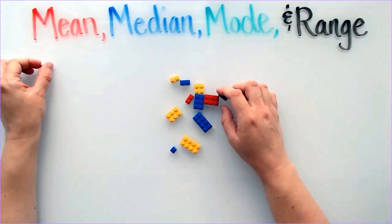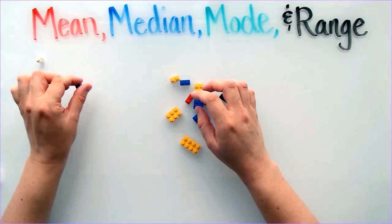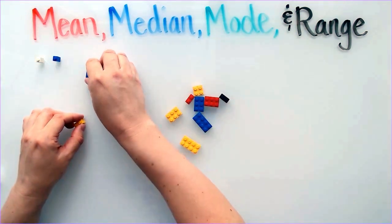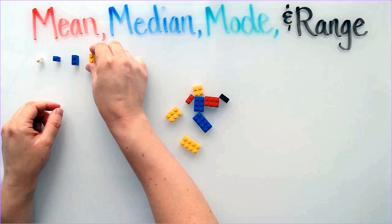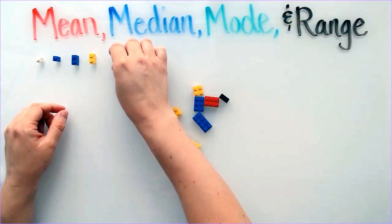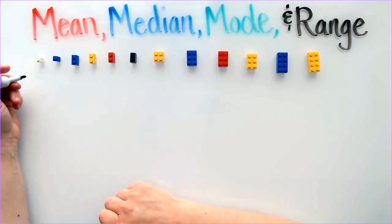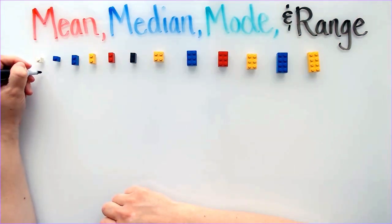Using my Legos, I am going to place each Lego in order from least to greatest by counting the studs on the top of each Lego. I am writing the number of studs under each Lego.